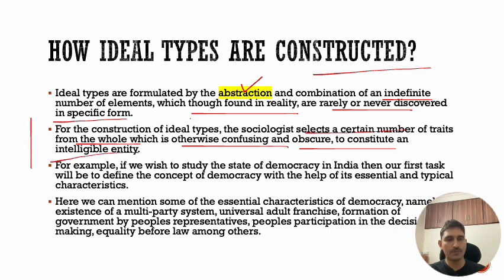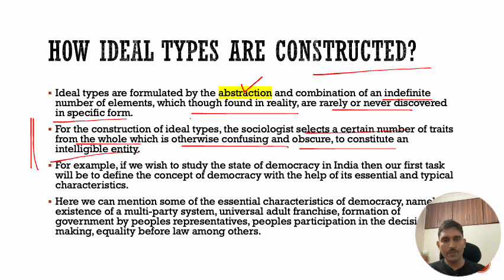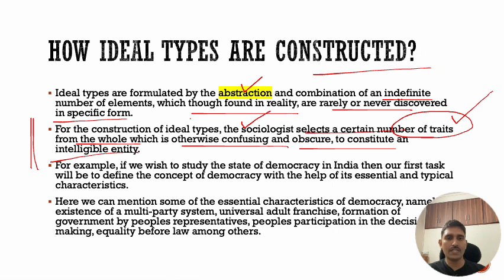Any social reality is complex in nature; it is not easy to classify or categorize it. To remove this confusion, a sociologist cherry-picks certain number of traits — the particular characteristics of a phenomenon — and studies only those characteristics which have a direct role in explaining that phenomenon.